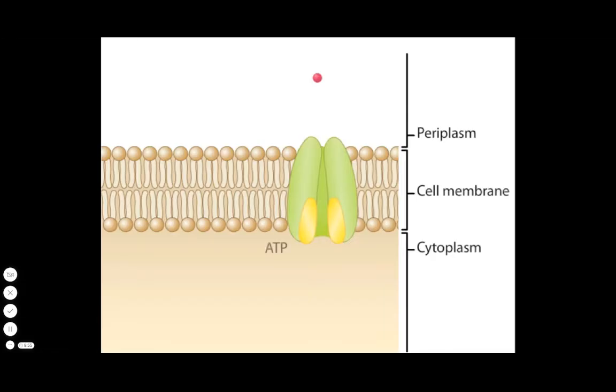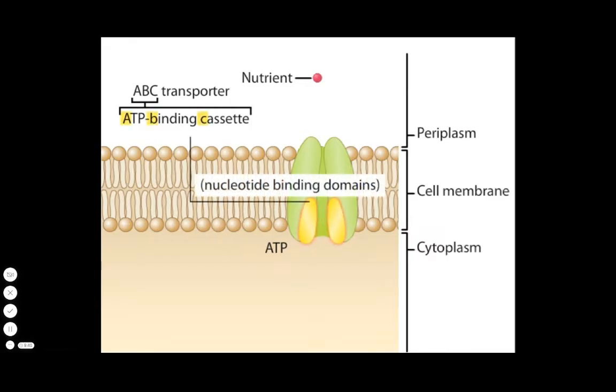The energy stored in ATP can drive membrane transport of nutrients into the cell. The largest family of energy-driven transport systems are the ABC transporters, named for their ATP binding cassettes, which are also called nucleotide binding domains.